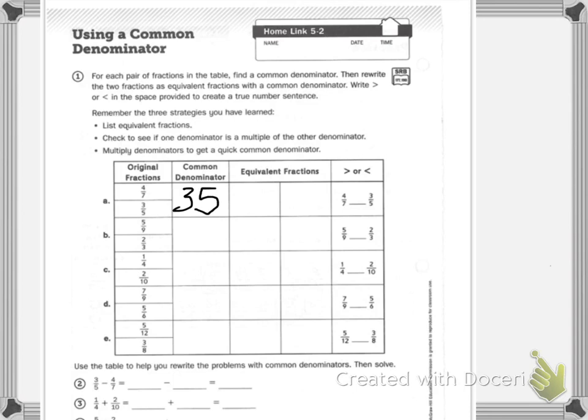To get to 35, my first equivalent fraction: if I'm looking at 4 sevenths, 7 times 5 is 35, so I have to multiply 4 times 5. 4 times 5 is 20.